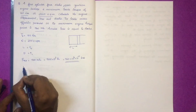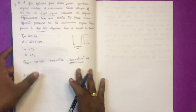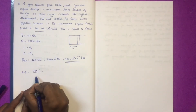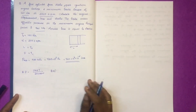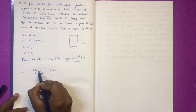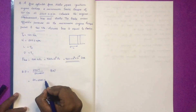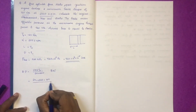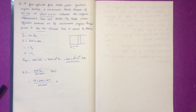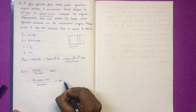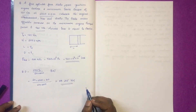First, we calculate brake power using BP = 2πNT/60. With N = 3000 RPM and torque Tb = 160 Nm, divided by 1000 to convert to kilowatts. The calculated value of BP is 50.265 kW.